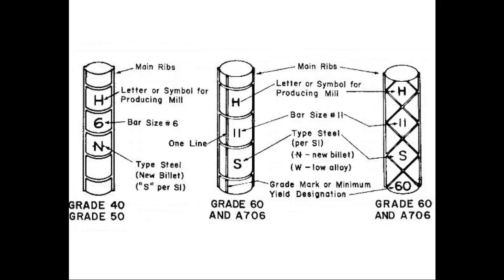Rebar has certain codes stamped into it. The ribs indicate grade — for example, two ribs indicate a grade 60 minimum yield strength; grade 40 or 50 is marked differently. The letter designates the producing steel mill, a number indicates the rebar size, and the letter N indicates the type of steel. The structural specifications indicate what type of rebar is required, and it's important that the contractor supply exactly what is specified or get prior approval.